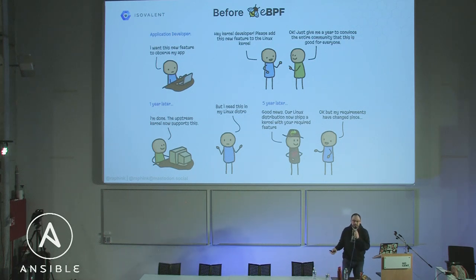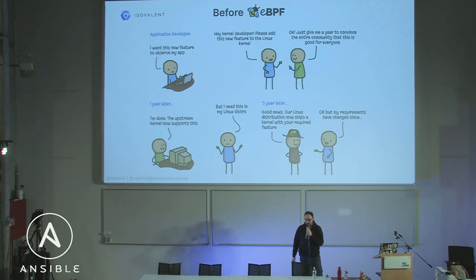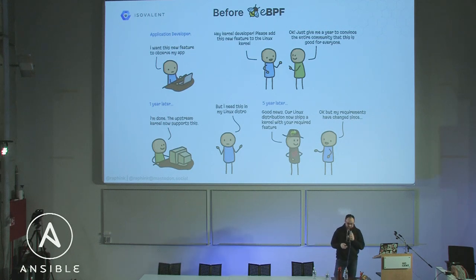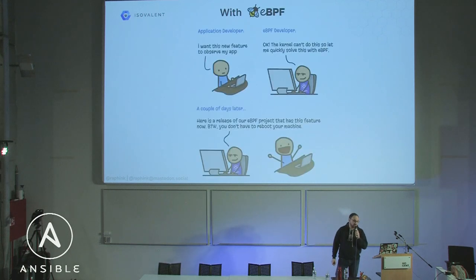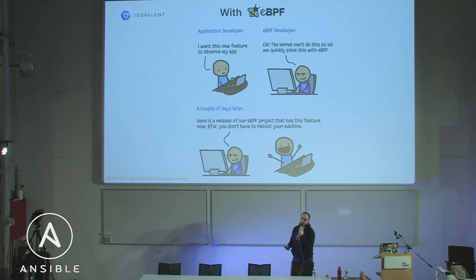The world, especially cloud-native environments, is not evolving at this pace — it's going much faster, so we want features to get into the kernel much faster. With eBPF, you can actually extend the Linux kernel in a much faster way. You can inject features into the Linux kernel without recompiling, without even rebooting your machine — extending kernel functionalities at runtime. This is not too far from what you could do with a kernel module, but there are a lot of advantages in terms of security and stability.